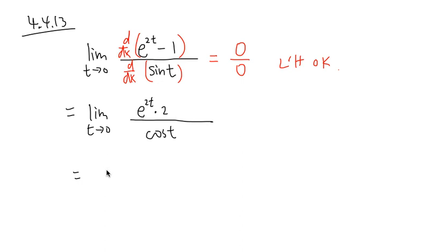We will have 2e to the 2 times 0, because now t equals 0, over cosine of 0. On the top, I have 2 times e to the 0 power. This is pretty much the 0 power. 2 times 0 is 0.